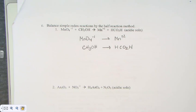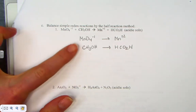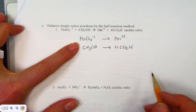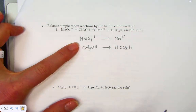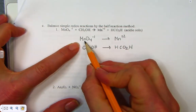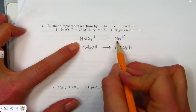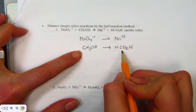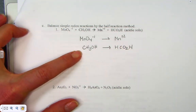Step 1: divide them into two half-reactions. Step 2: balance everything that is not H or O. We have 1 Mn on each side — good. And 1 carbon on each side — check.